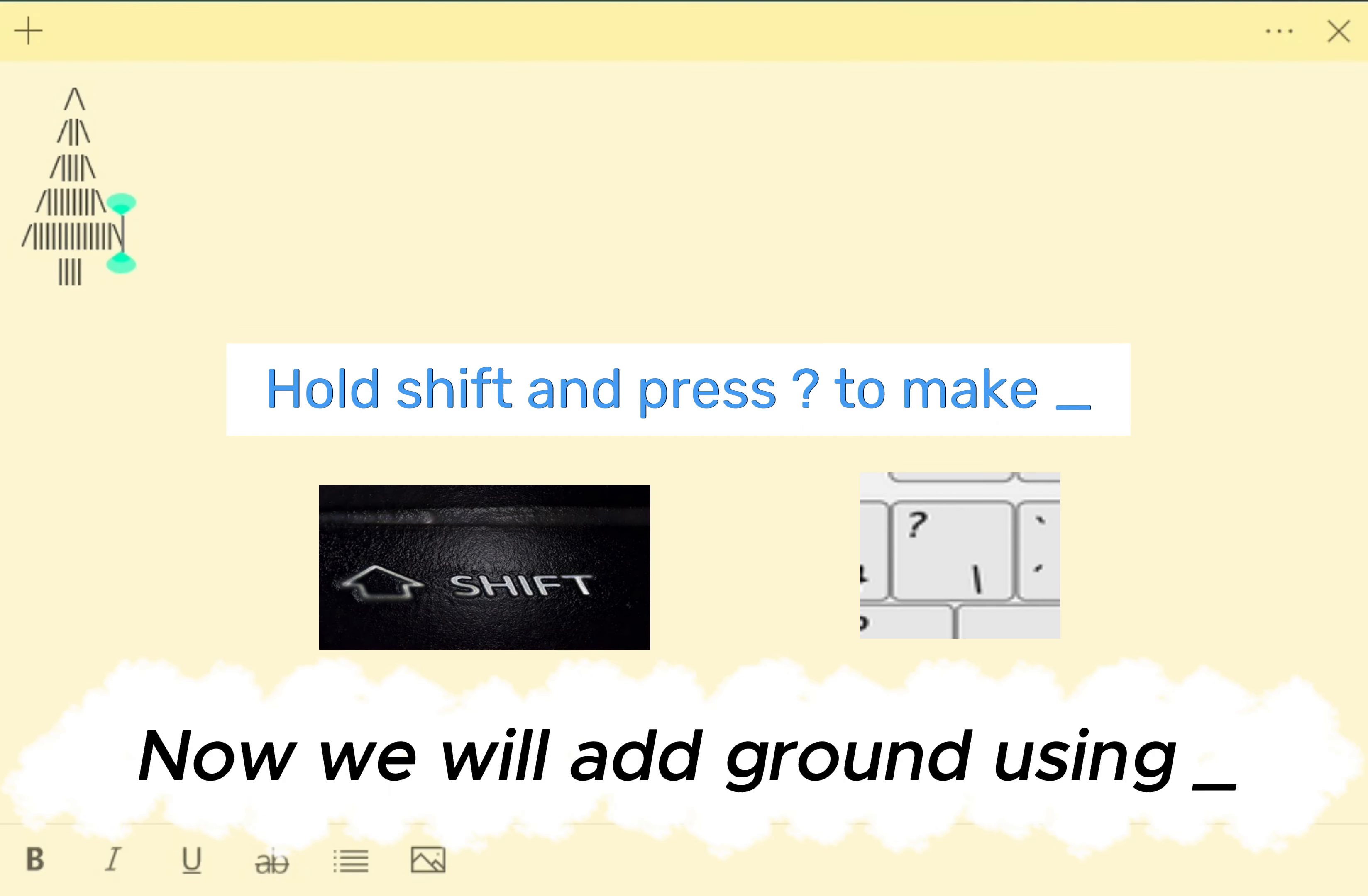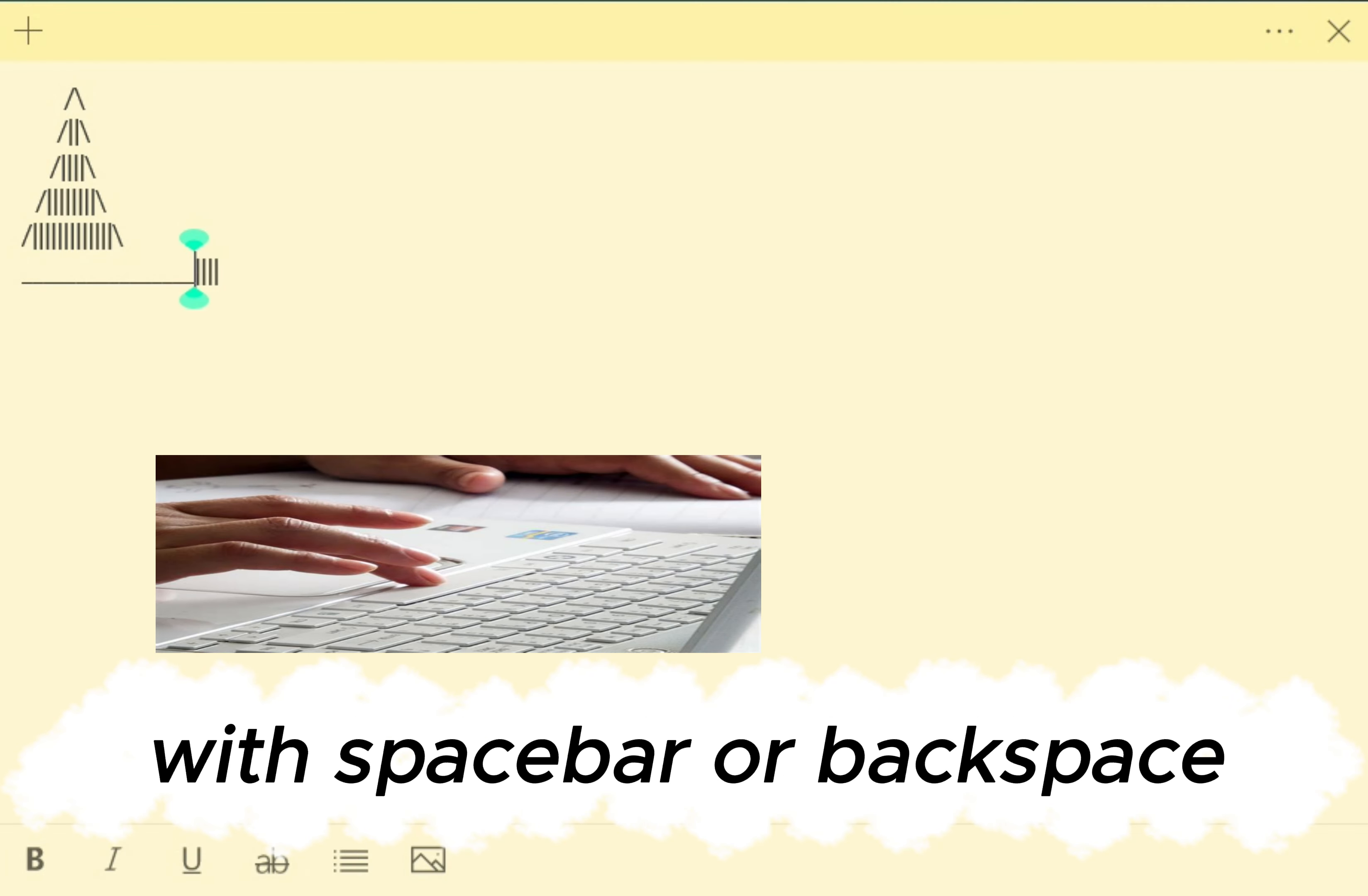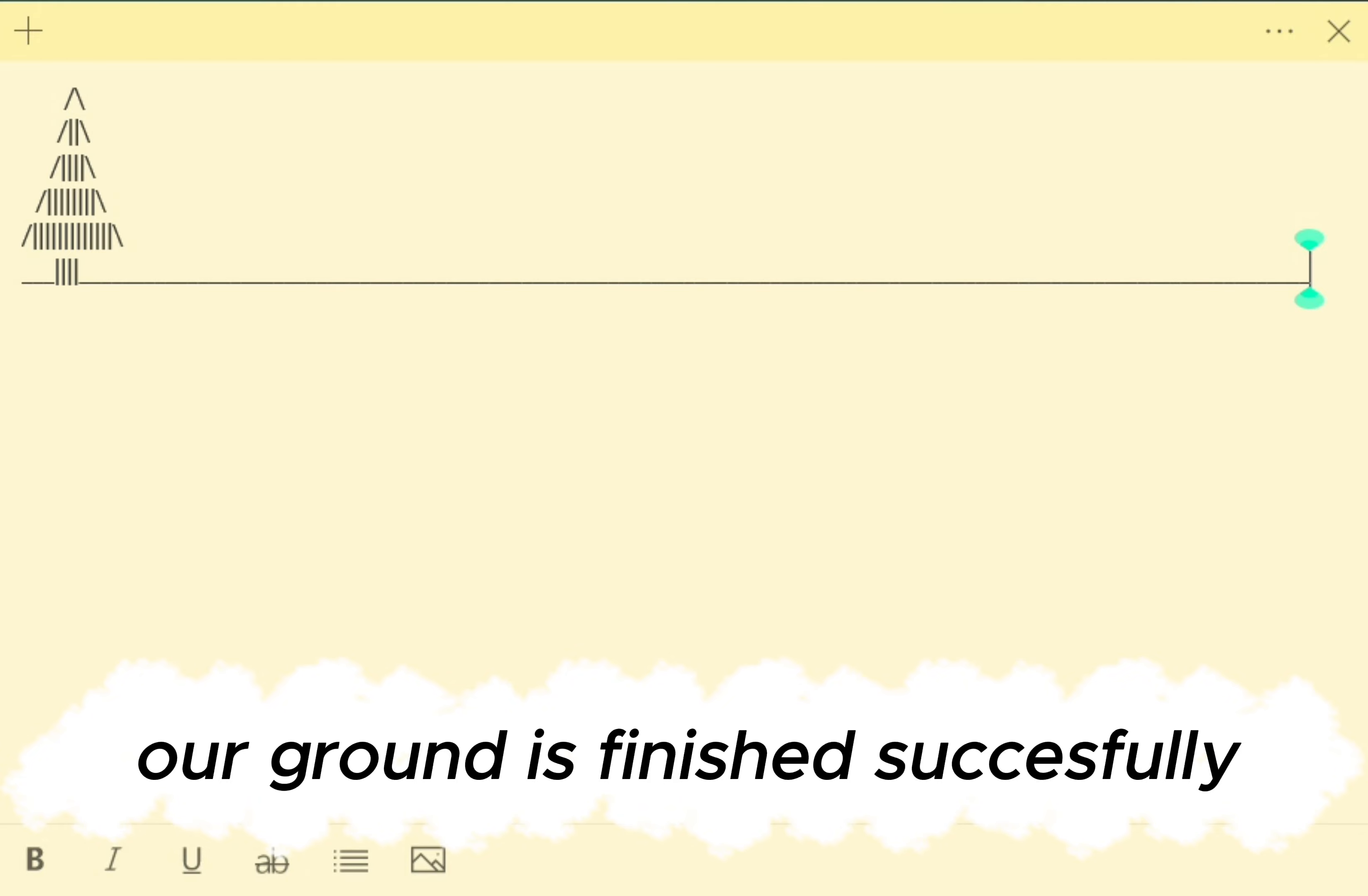Now we will add ground using underscore. Don't forget to reposition tree trunk back with space bar or backspace. Now just hold underscore for other side. Our ground is finished successfully.